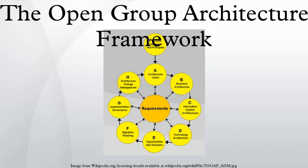An architecture framework is a set of tools which can be used for developing a broad range of different architectures. It should describe a method for defining an information system in terms of a set of building blocks, show how the building blocks fit together, contain a set of tools, provide a common vocabulary, include a list of recommended standards, and include a list of compliant products that can be used to implement the building blocks.